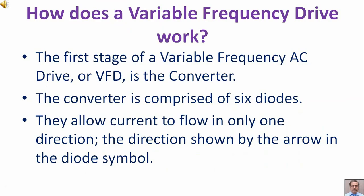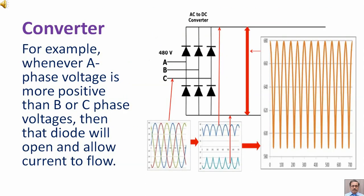How does a variable frequency drive work? The first stage of a variable frequency AC drive or VFD is the converter. The converter is comprised of six diodes. They allow current to flow in only one direction, the direction shown by the arrow in the diode symbol. For example, whenever A phase voltage is more positive than B or C phase voltages, then that diode will open and allow current to flow.